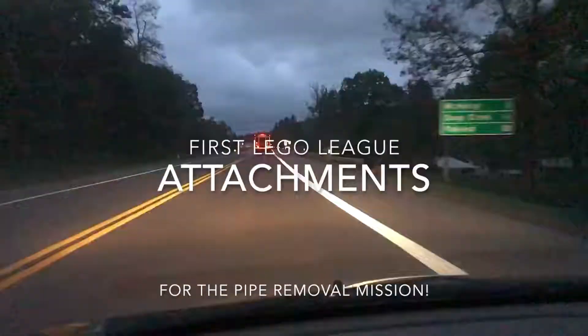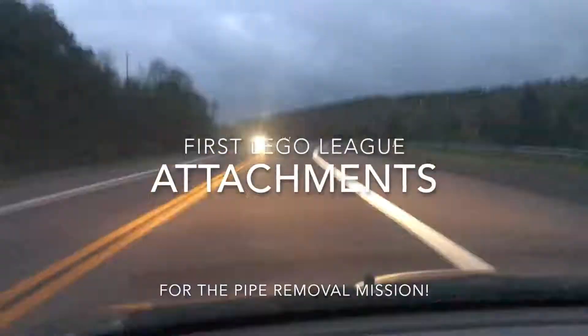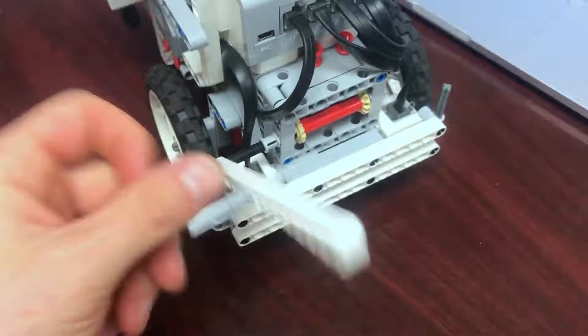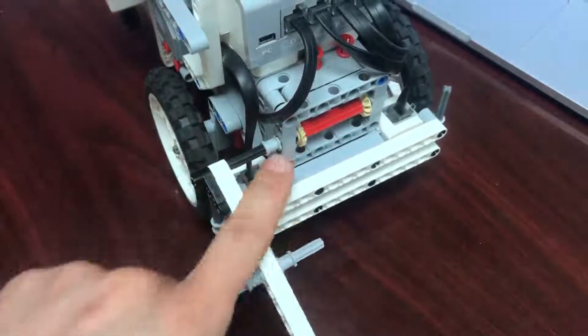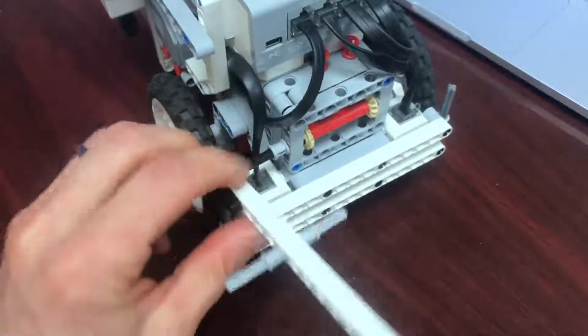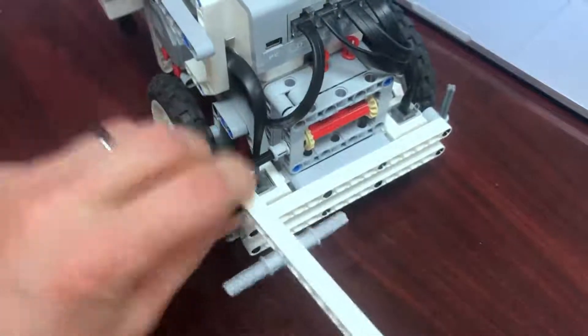In this video, I want to show you the first active attachment. It looks like this on the front of our robot - just a beam that sticks out. It's connected to this little gearbox right here with an axle in it, and it's used to pick up the pipe in the First Lego League hydrodynamics mission.